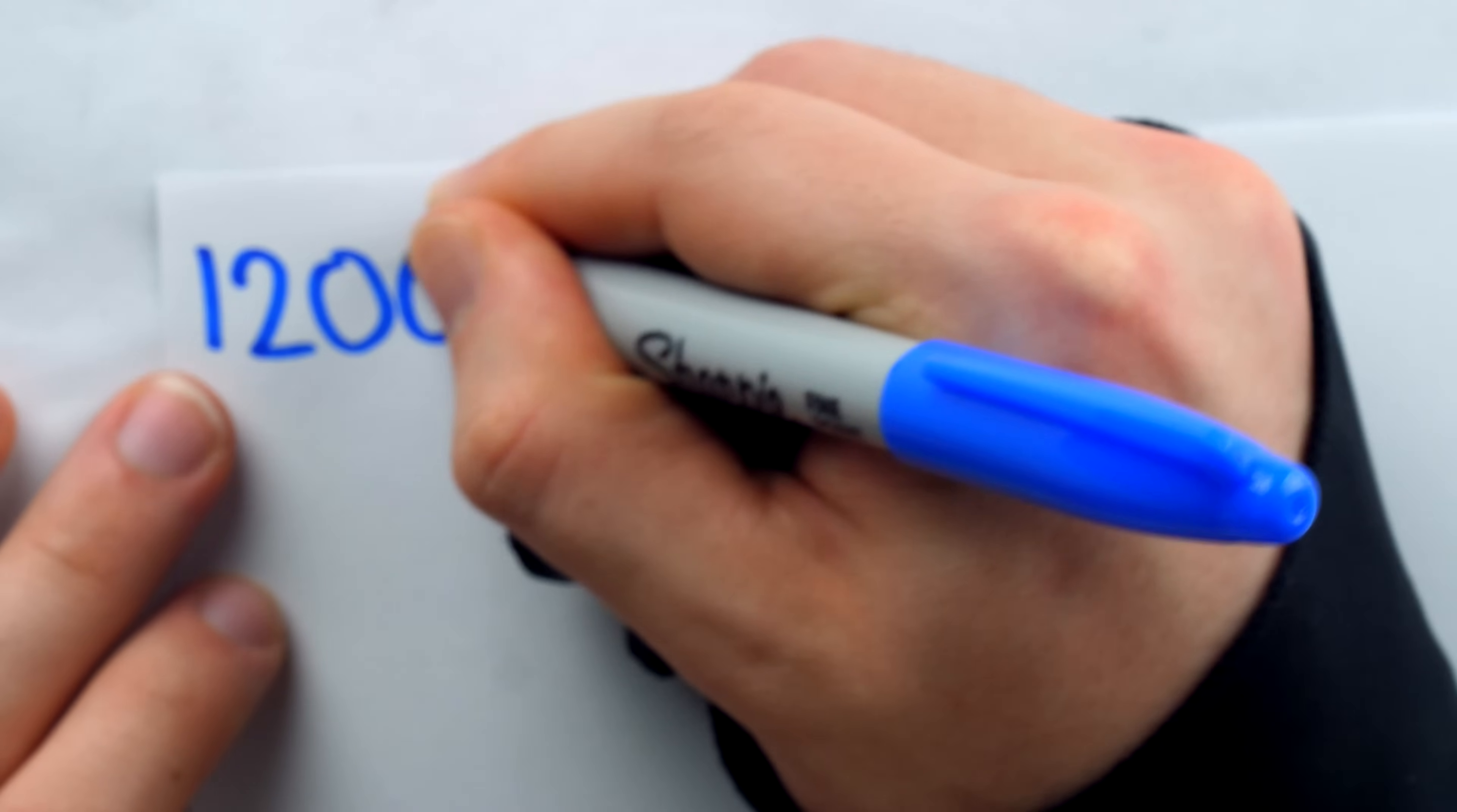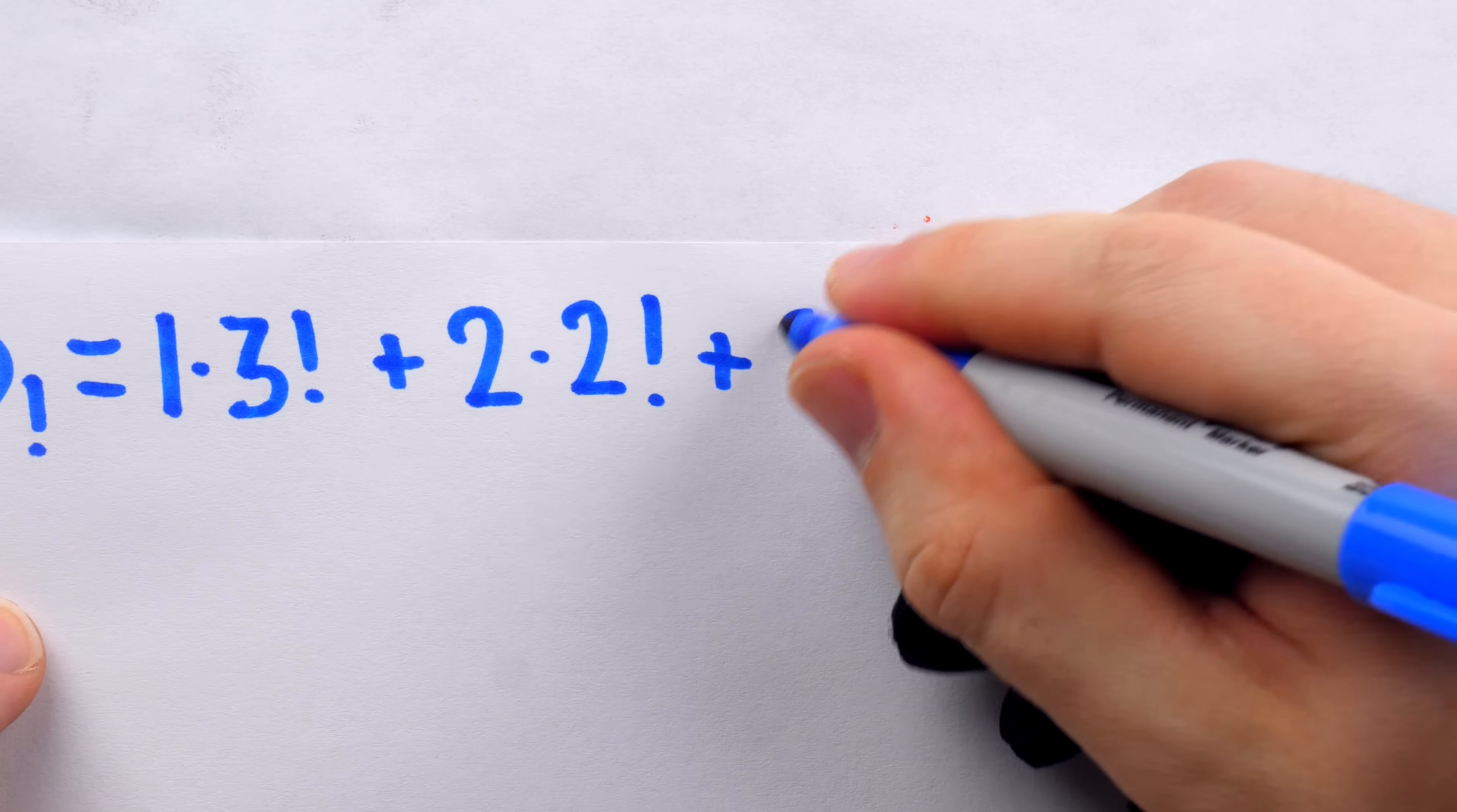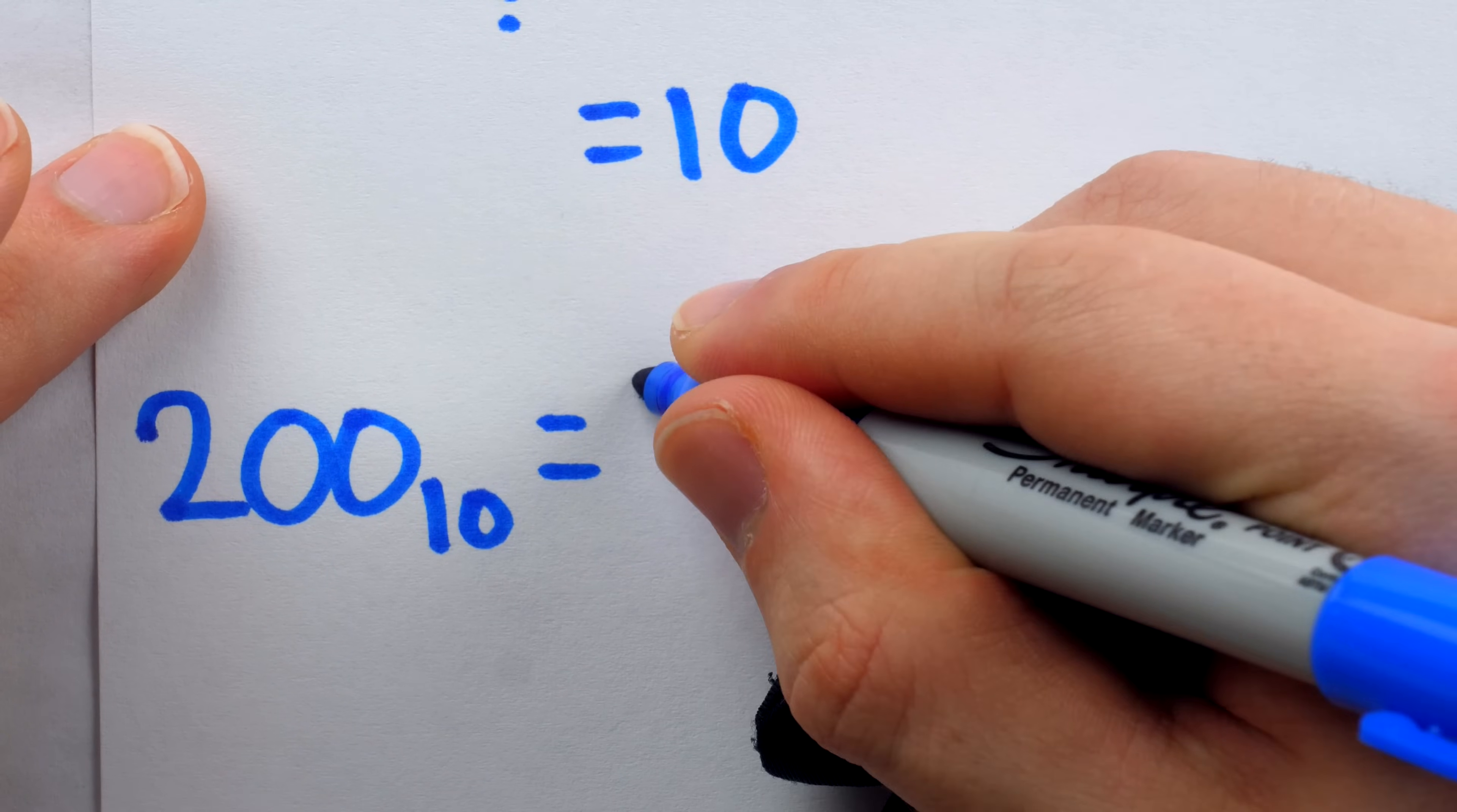So for example, the number 1, 2, 0, 0 in the factorial base system would be 1 copy of 3 factorial plus 2 copies of 2 factorial plus 0 copies of everything else. So this number would be 10. If we take our beloved 200 in the decimal system, how does that look written in the factorial base system? You could pause and try to figure it out if you want to get dirty with the factorial base system. I'll tell you now though,